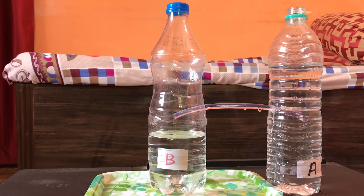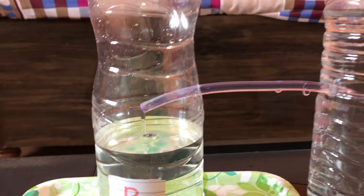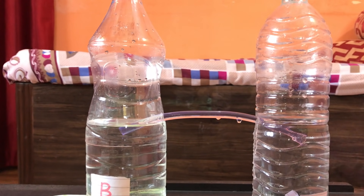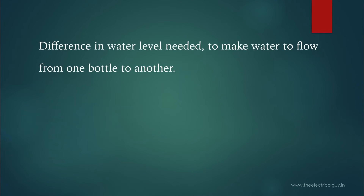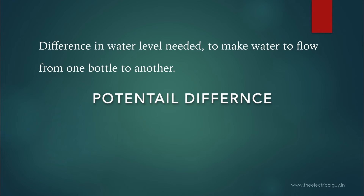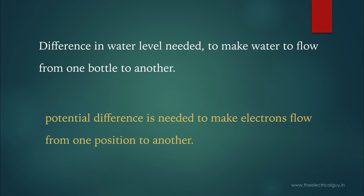Water is flowing because there is a difference in water level of both the bottles. Water will continue to flow until the water level of both bottles becomes the same. Here you can see water is not flowing as the level of both bottles are now equal. The difference in water level needed to make water flow from one bottle to another is what we call potential difference or voltage. So potential difference or voltage is required to make electrons flow from one position to another.